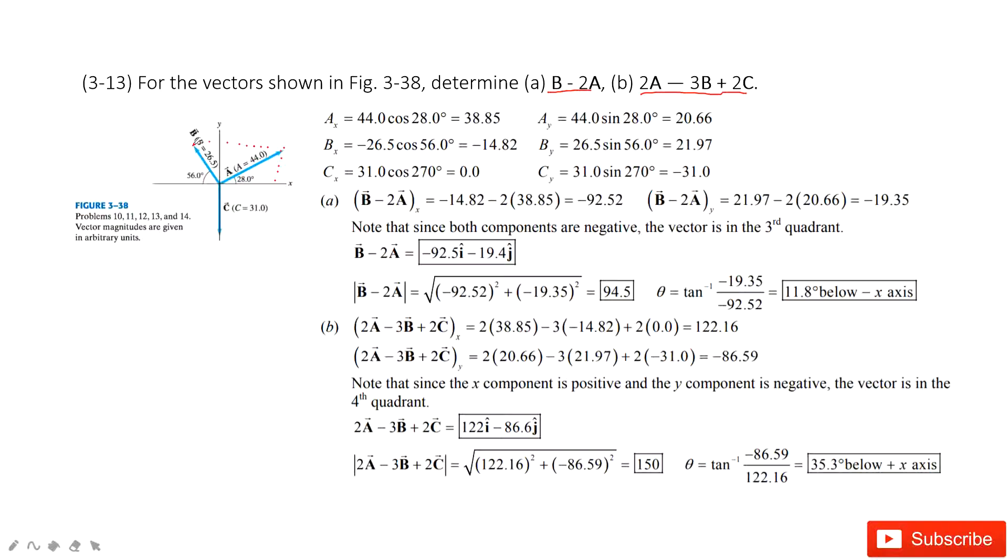When we project vector b into x and y components, you can see at the x component, we must keep the negative sign there. And then we have by as b sine theta. So we project b into x and y components.